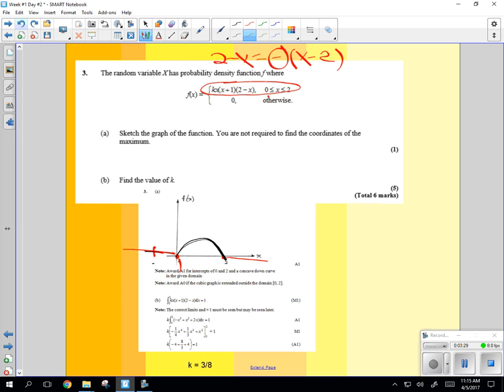Find the value of k. So we're going to integrate. We don't care about anything else. What should the area of this be if it's a probability density function? 1. So my answer should be 1.